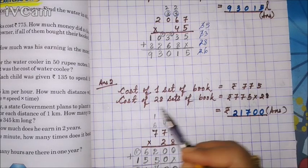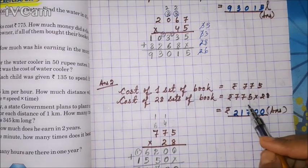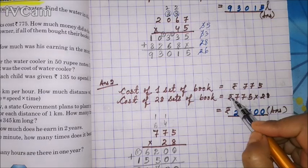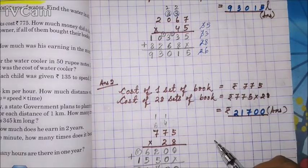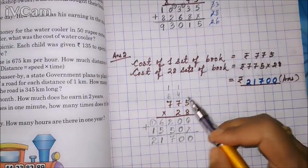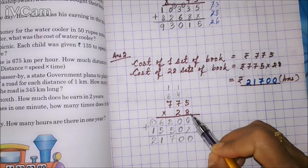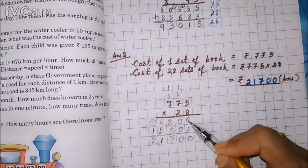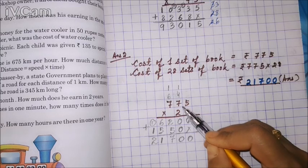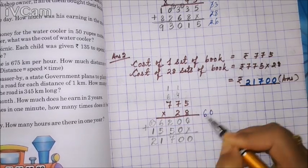Write in your copy: cost of one set of books = 775 rupees. Cost of 28 sets of books = 775 × 28 rupees. Write the rupee symbol and then multiply.